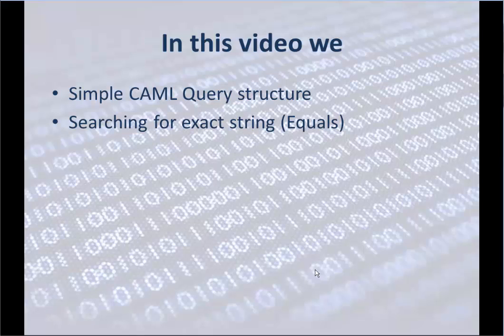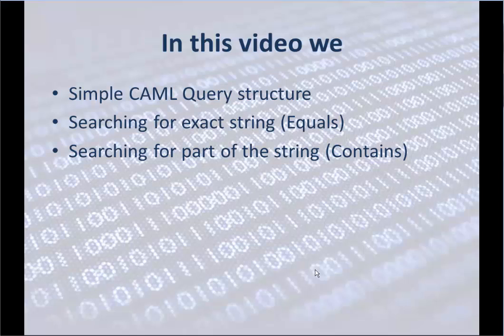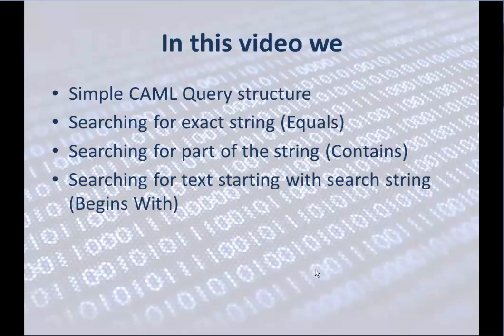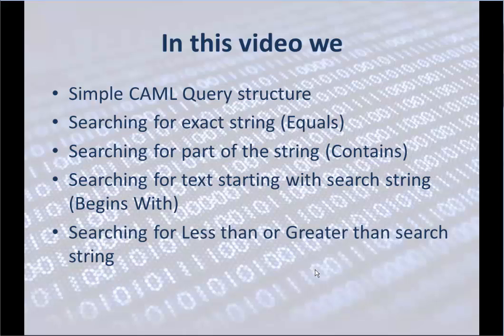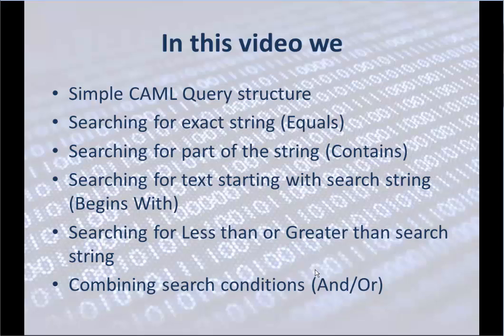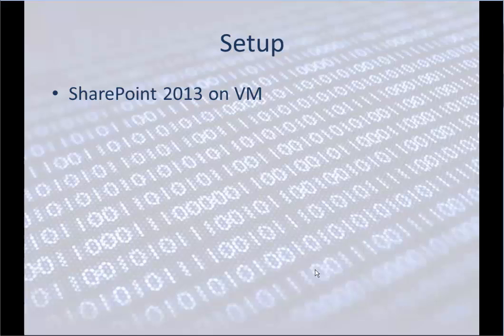I will explain a simple CAML query structure. Then we go for searching for exact string, basically an equals statement. Then we will search for part of the string, a contains statement. The next part is searching for text starting with the search string, like begins with, and then less than or greater than.